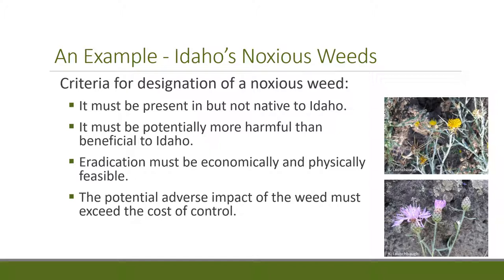There are noxious weed lists at the national, state, and county levels. In Idaho, for example: the weed must be present but not native to Idaho; it has to be potentially more harmful than beneficial; eradication has to be economically and physically feasible — for instance, cheatgrass is a bad weed but it's not on the noxious weed list because we could never eradicate it; and finally, the potential adverse impacts must exceed the cost of control.